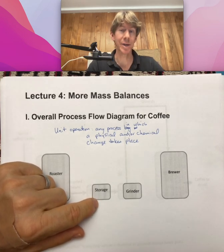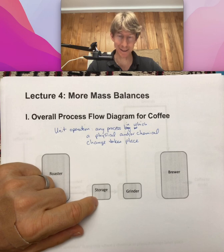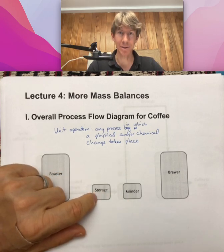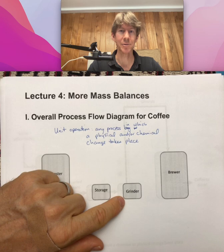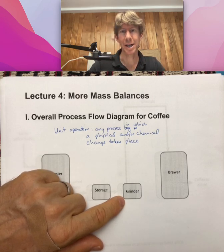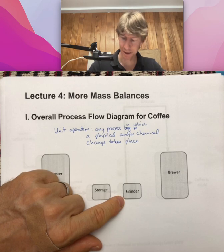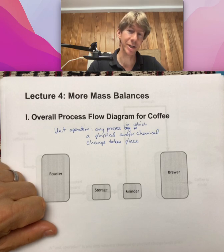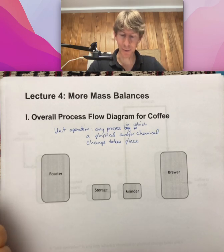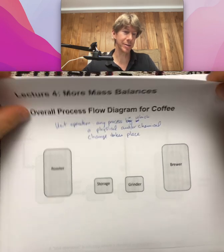In storage, especially in the first few days but continuing onwards, the beans continue to react and release gases. Grinding is a physical change — it does also release carbon dioxide and gases stored in the beans, but it's primarily physical. Brewing is also primarily a physical change because things are dissolving. These are all unit operations, and we're going to build a process flow diagram for coffee involving all of them.